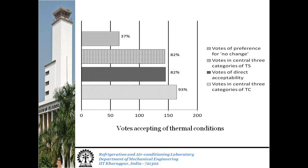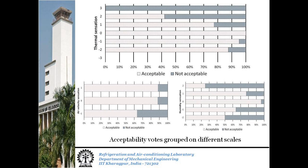While three of the criteria give relatively similar values, thermal preference is too stringent a criterion for judging acceptability. As a gross evaluation, we can see that satisfaction over the whole survey remains over 80%. Examining responses to the acceptability question, we see that votes on the cooler side of the thermal sensation scale are more accepting, as are votes that feel air movement is just right or even breezy.